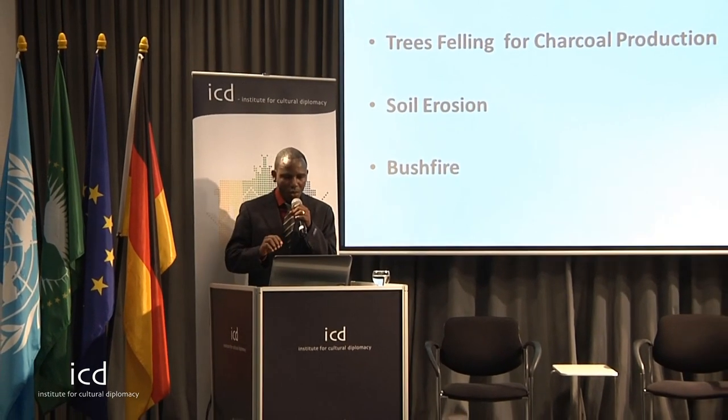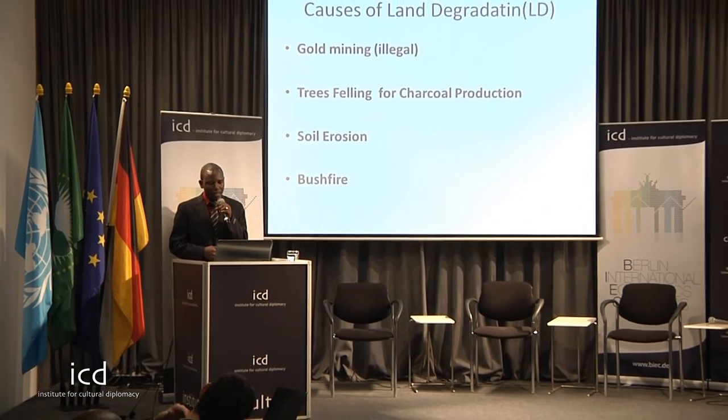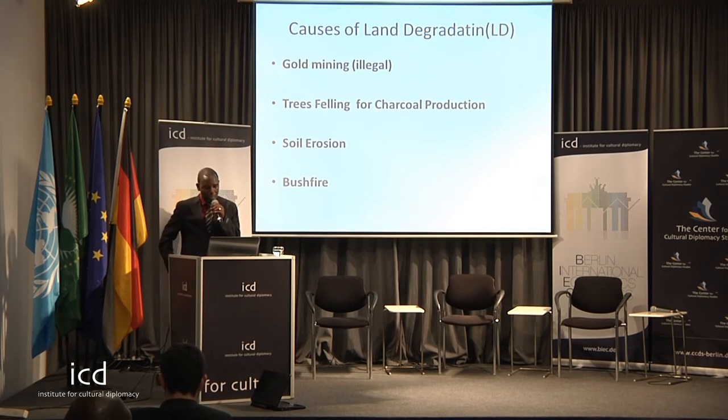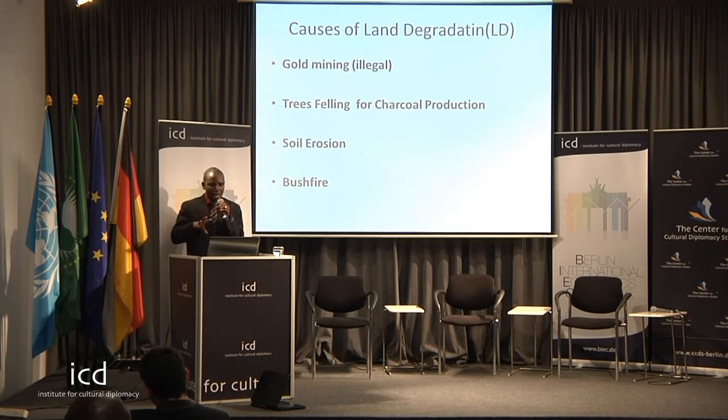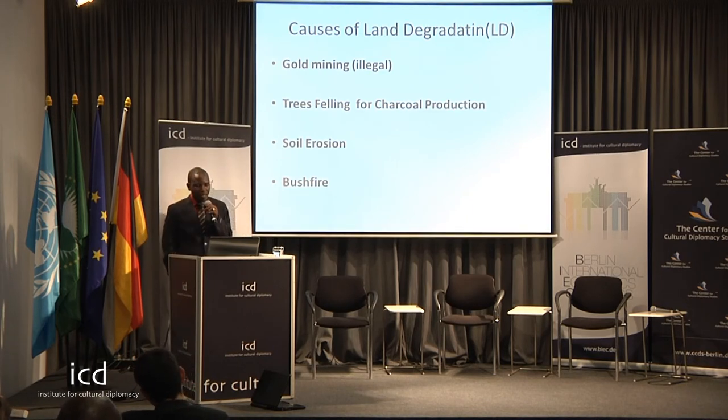I've given you the background and location of Ghana. Now I'd like to go straight to the causes of land degradation. In the Upper West region, the causes of land degradation include gold mining — typically involving illegal practices. In mining there are legal, environmentally friendly practices, but we are talking about the illegal aspects. The next cause is tree felling for charcoal production, and then we have soil erosion and bushfire. Predominantly, these practices have caused a lot of land degradation in that area over the long run.